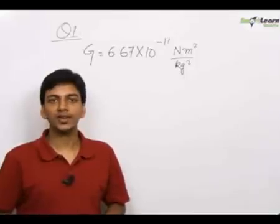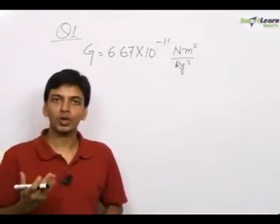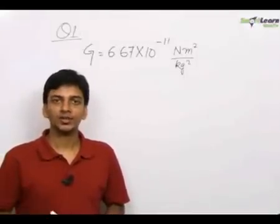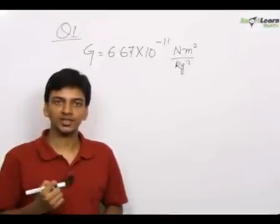The value of G has been given in SI units and we have to convert the value of G to the CGS system. The CGS system stands for centimeters, grams and seconds.